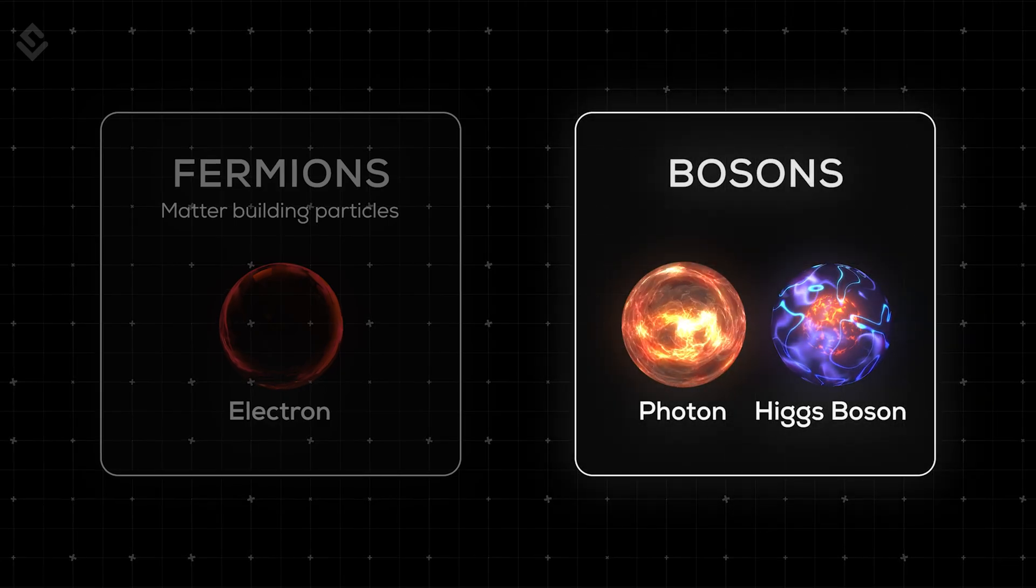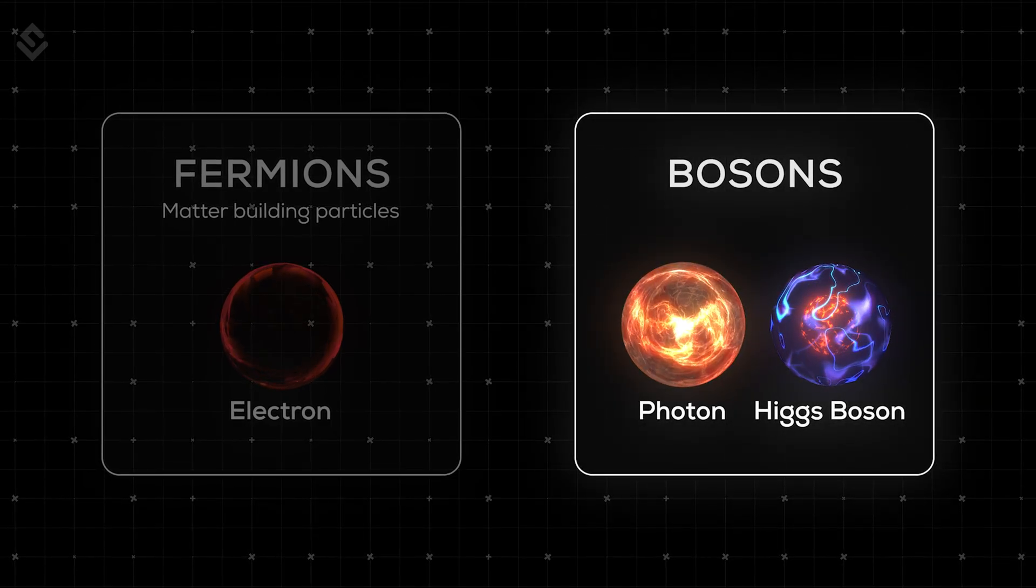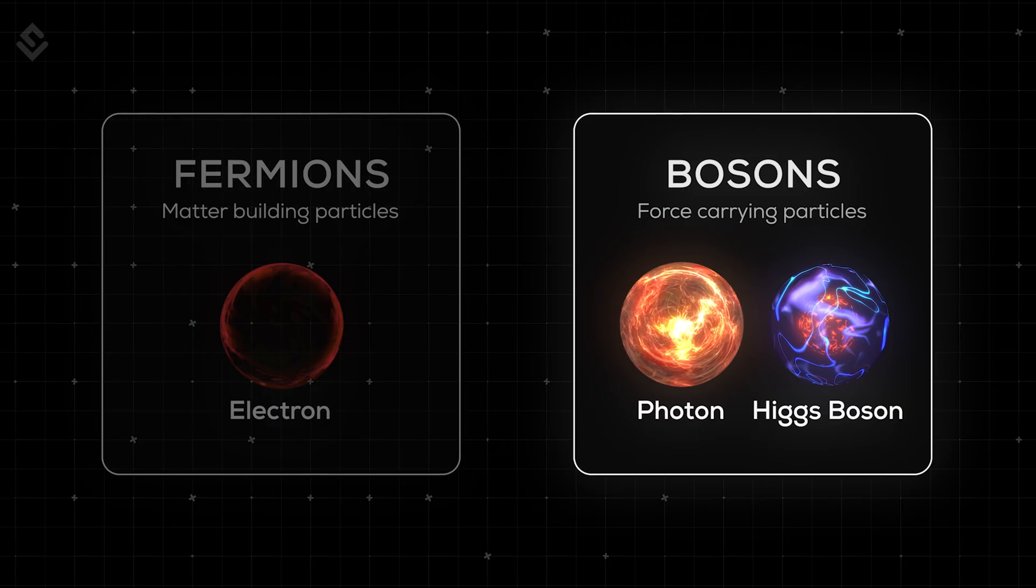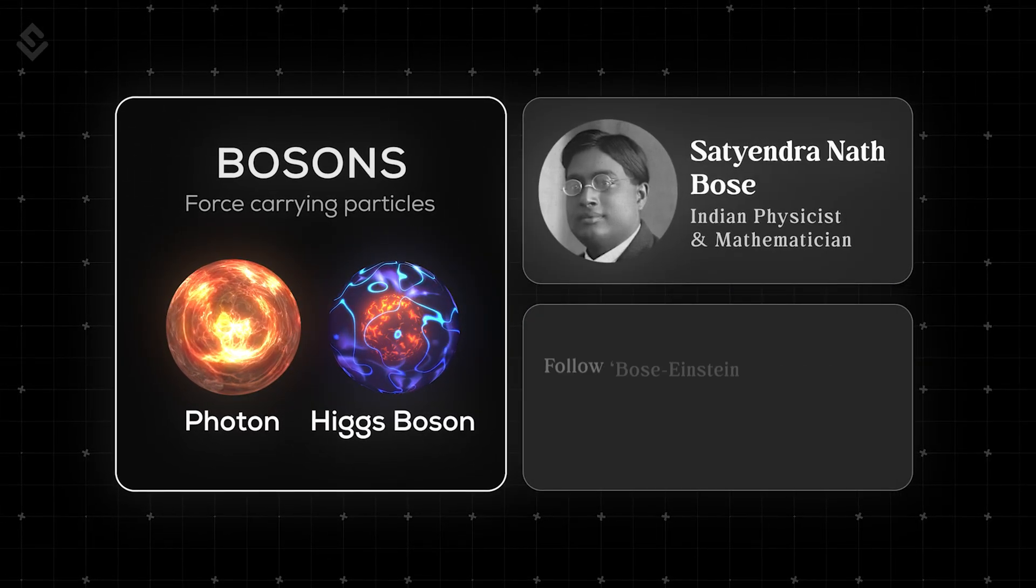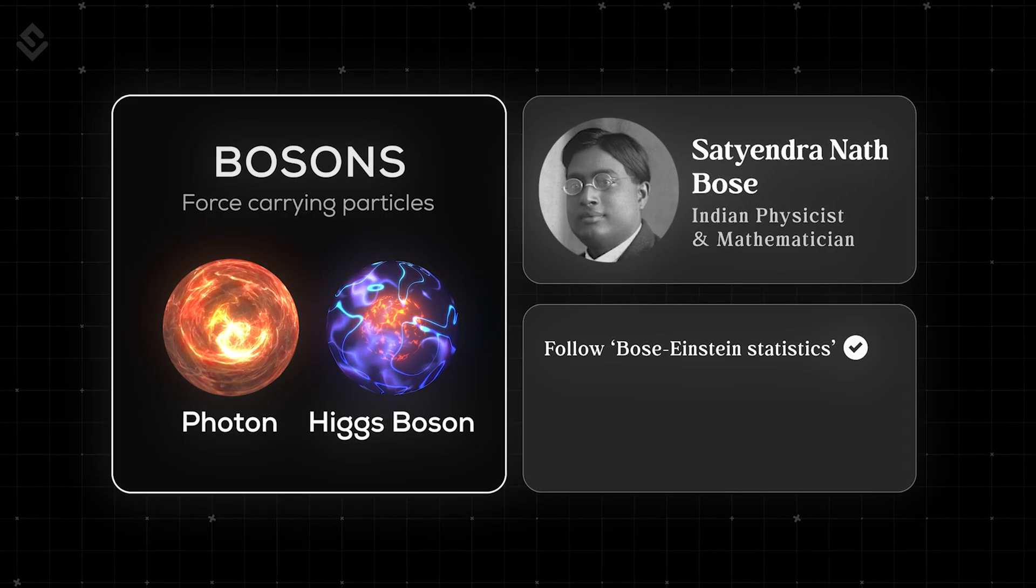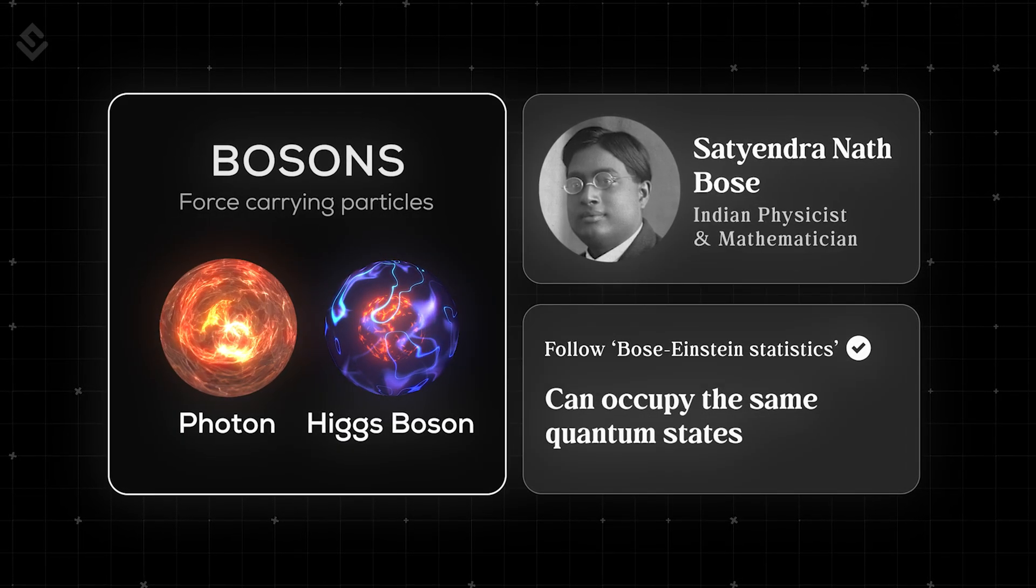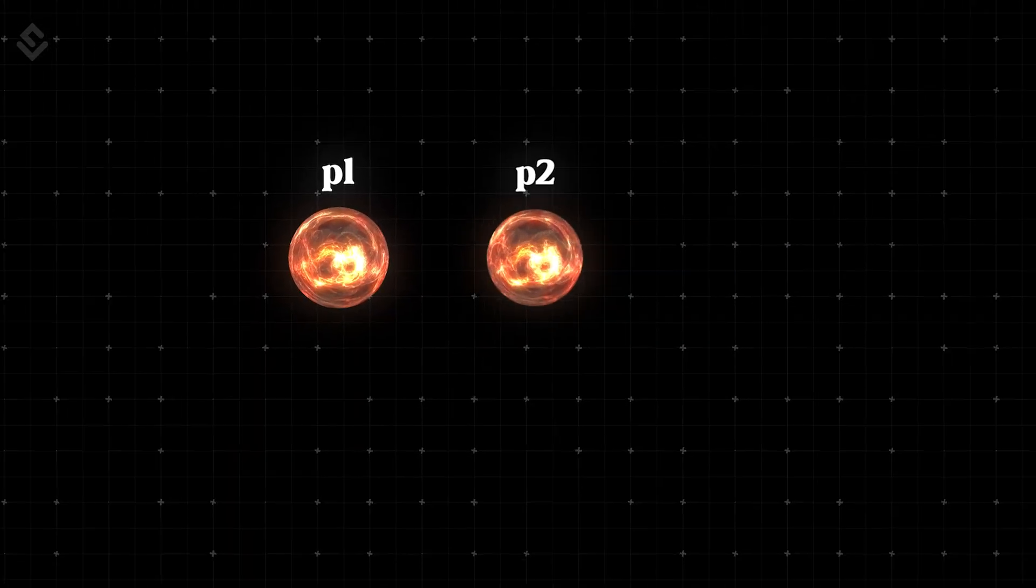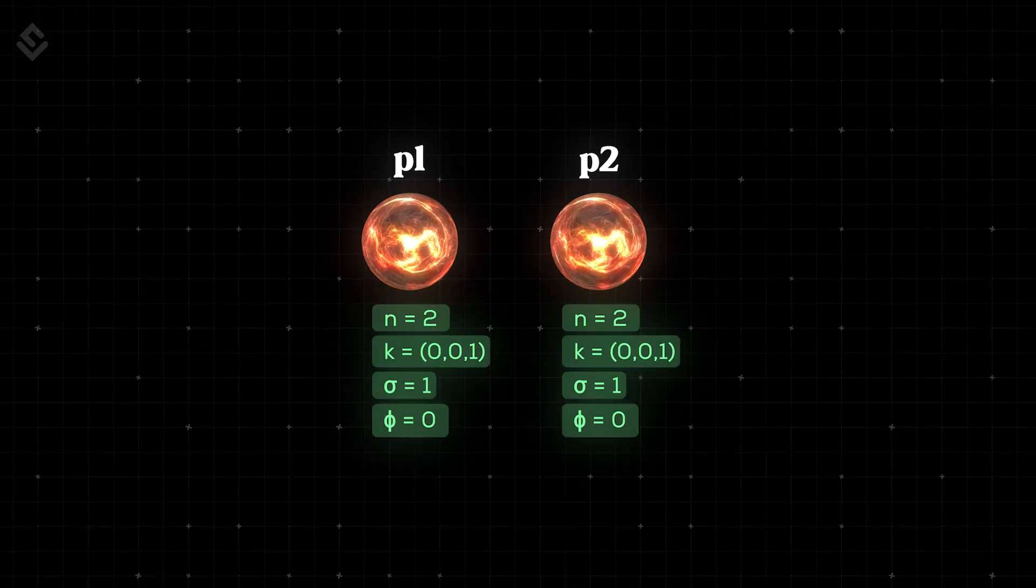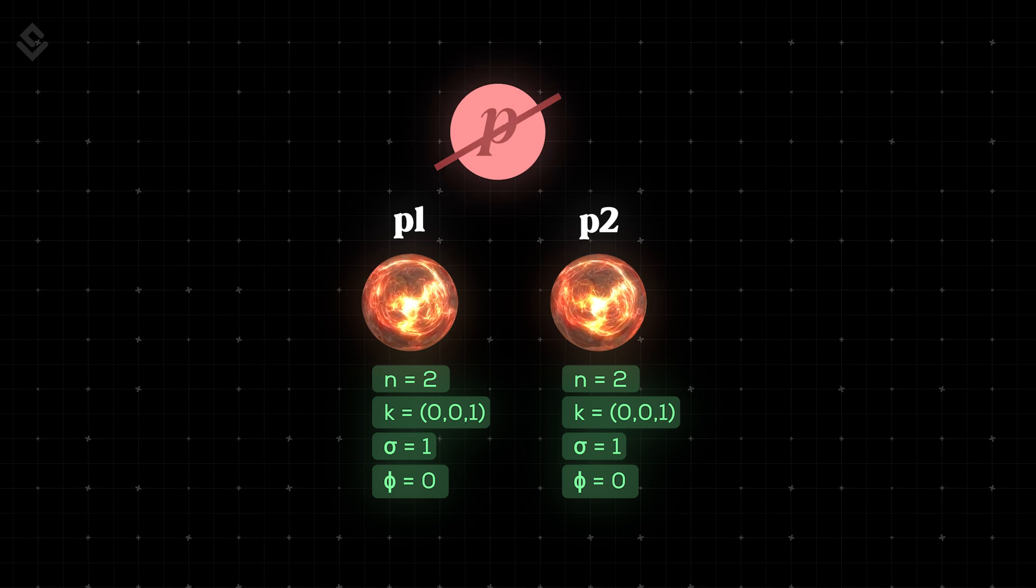Now, let's move to the boson part. As mentioned earlier, bosons are force carrier particles. Named after the physicist Satyendra Nath Bose, these particles follow the Bose-Einstein statistics, and they can occupy the same quantum states, unlike fermions, which basically means they don't mind sharing the same quantum states, and so they do not follow the Pauli exclusion principle. This unique trait allows them to mediate forces that bind the universe together.